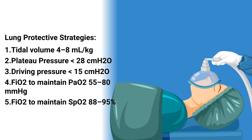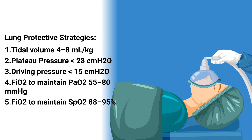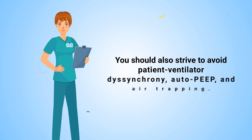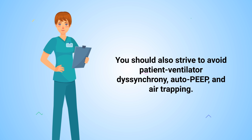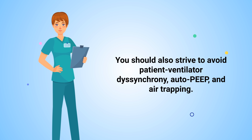To be more specific about lung protective strategies: you should strive to keep the patient's tidal volume within a range of 4 to 8 milliliters per kilogram. You should try to keep their plateau pressure less than 28, their driving pressure less than 15, and strive to use an FiO2 that will maintain their PaO2 between 55 and 80 mmHg, or an FiO2 to maintain the SpO2 between 88 to 95 percent. You should also strive to avoid patient-ventilator dyssynchrony, auto-PEEP, and air trapping.